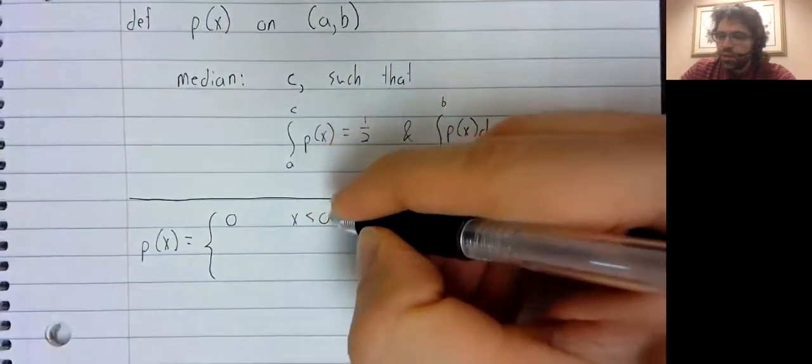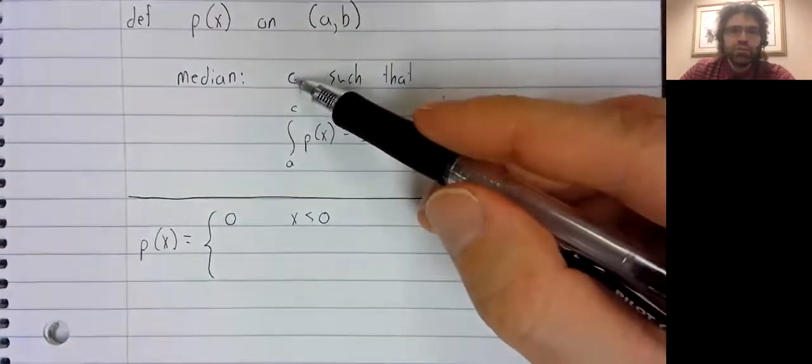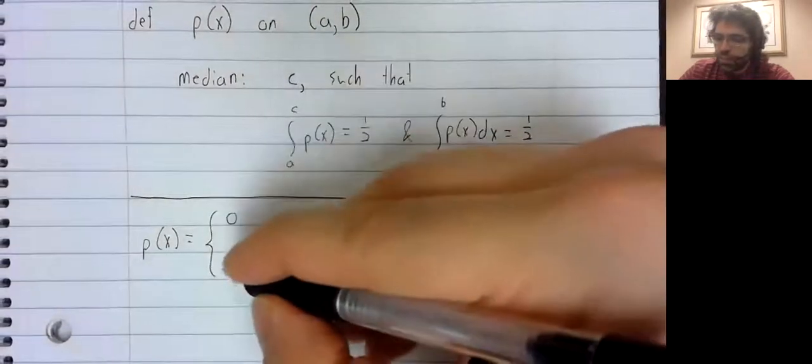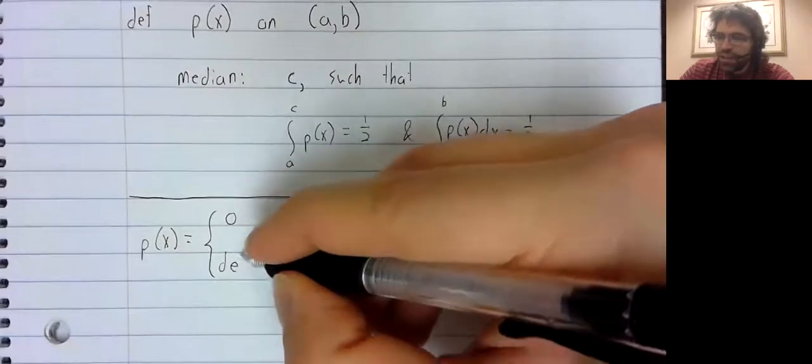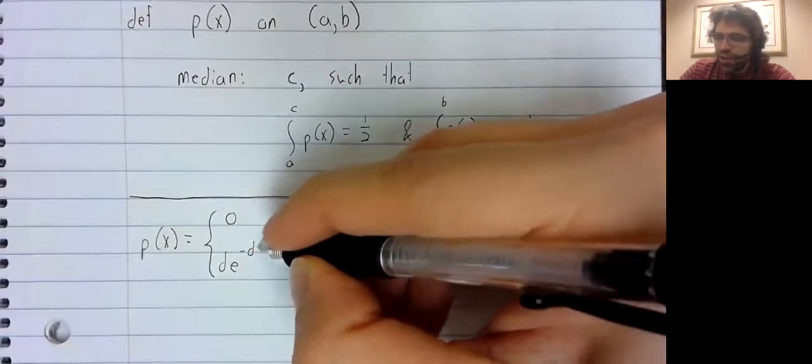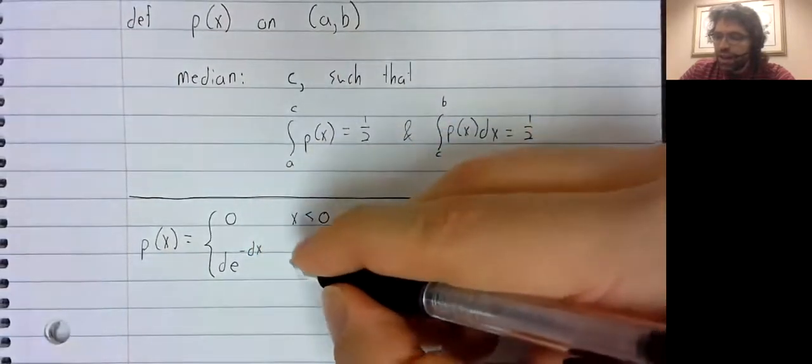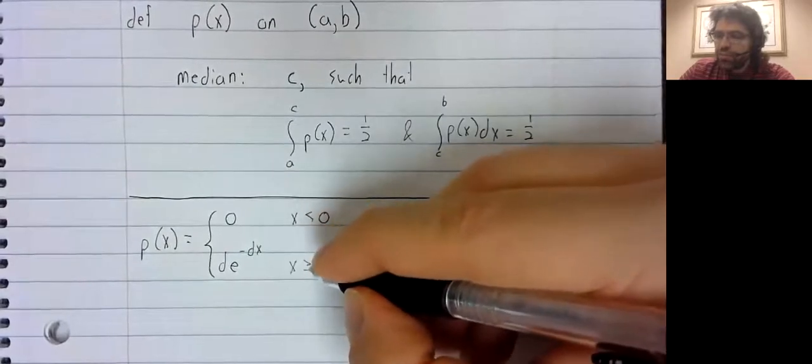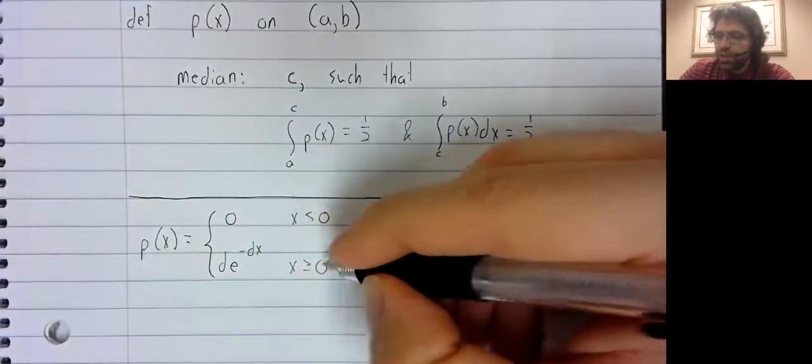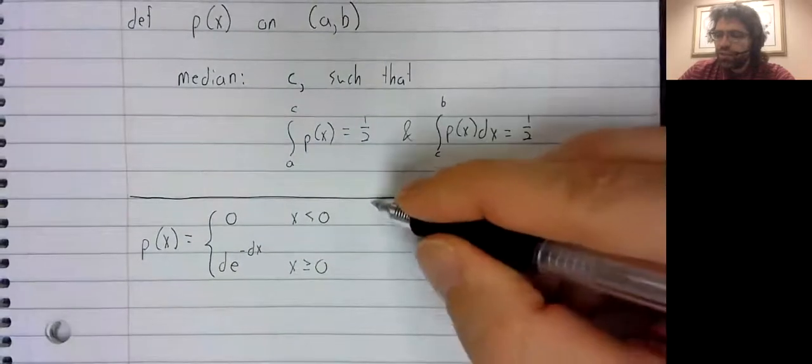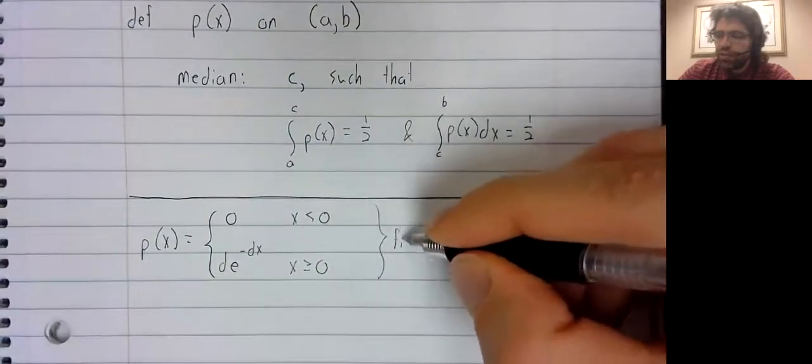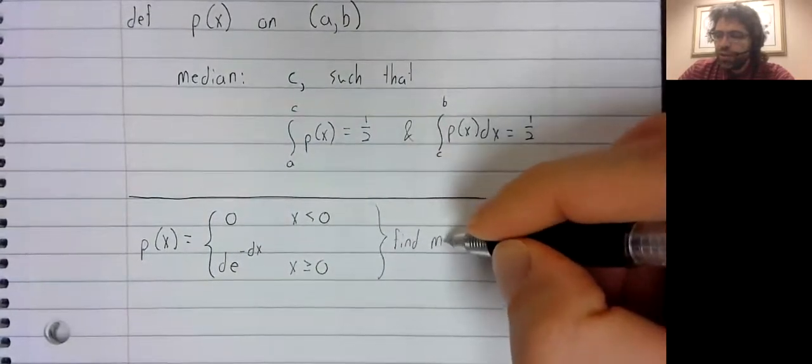We have already used C for something, so let's say D, e to the negative DX. Let's find the median.